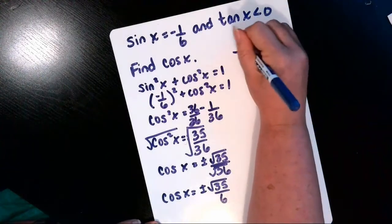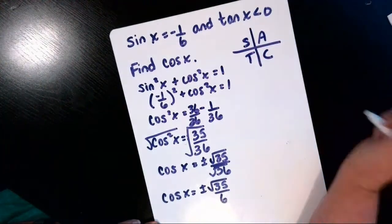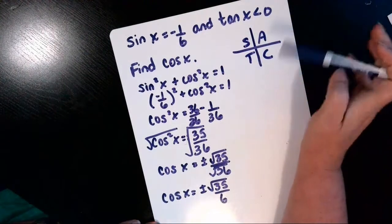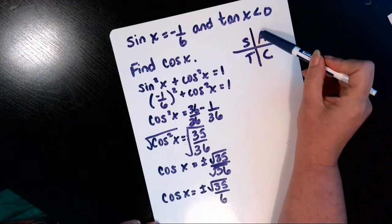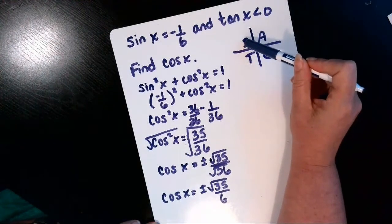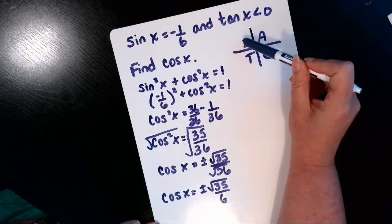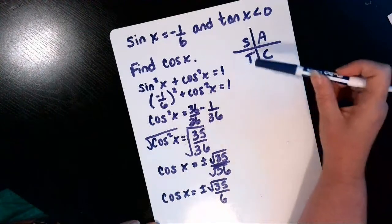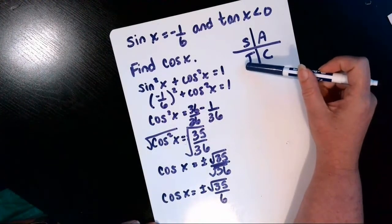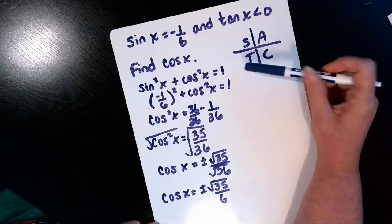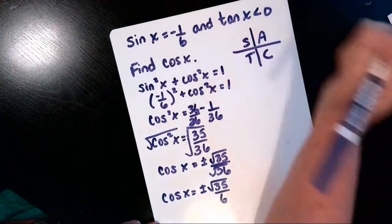The acronym all students take calculus reminds us where things are positive. Everything is positive in quadrant one, sine and its reciprocal cosecant are positive in quadrant two. Tangent and its reciprocal cotangent are positive in quadrant three.